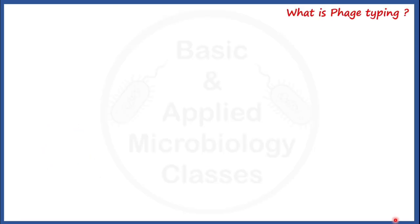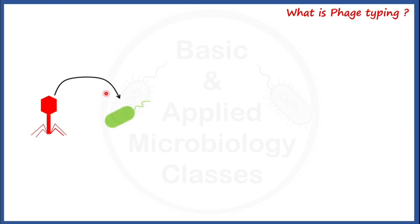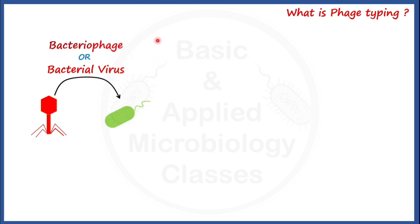Let's first understand this term 'phage.' Any virus which can replicate inside a bacterial cell is called a bacterial virus. For bacterial viruses, we most commonly use the term bacteriophage. The word bacteriophage has been taken from Greek, where 'bacterio' means bacteria and 'phage' means eater — so it means bacteria eater. Bacteriophage is also popularly known as phage.